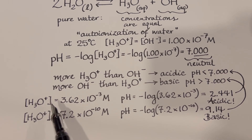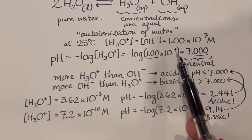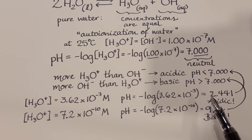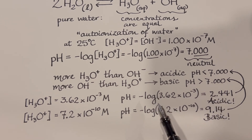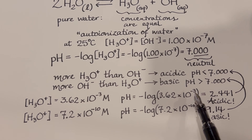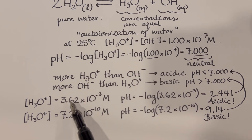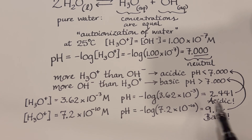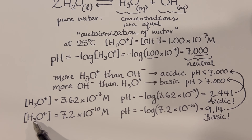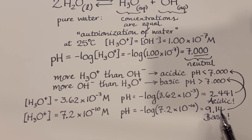When the hydrogen ion concentration goes up from what we have when it's neutral, we see that the pH goes down — and that is by virtue of the negative log. When the hydronium ion concentration goes down and is smaller, then we get a value of pH that is greater, and we call that basic.